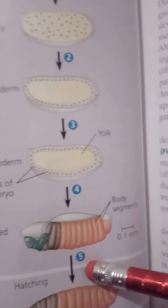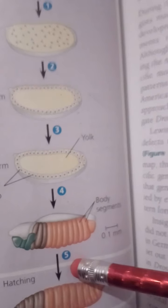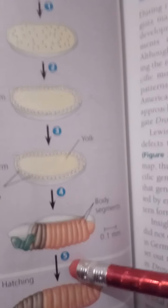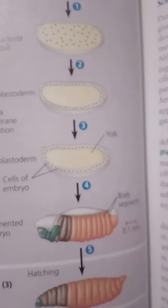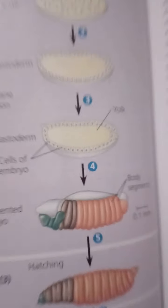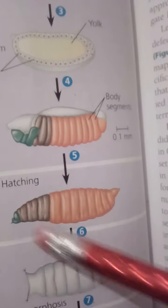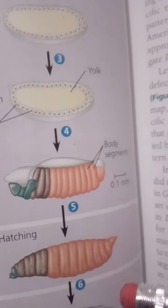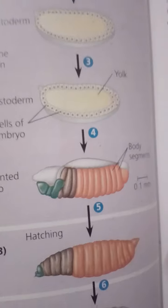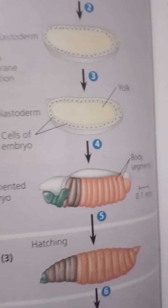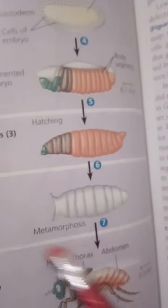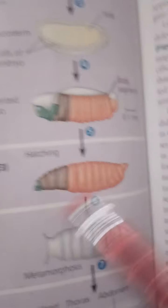Drosophila goes through three larval stages, during which the larva eats, grows, and molts — shedding its outer layer. At the sixth stage, the third larval stage becomes enclosed in a case forming a pupa. Then metamorphosis — the change from larva to adult fly — occurs inside the pupa, and the fly emerges.